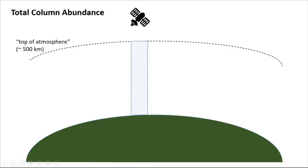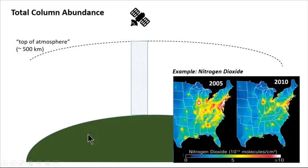We now describe further the concept of total column abundance. As has been pointed out, the satellite measures total amounts within the column within its line of sight. We can see this explicitly from our earlier shown image of nitrogen dioxide from satellite measurements. Notice the scale bar — the measurements on this map are in terms of 10 to the 15th molecules per square centimeter. The yellows on the graphic therefore indicate areas where the total number of nitrogen dioxide molecules in an atmospheric column of one square centimeter extending from the surface to the top of the atmosphere equals 5 times 10 to the 15th molecules. Lower and higher levels are indicated by the blue and the red portions of the plot, respectively.